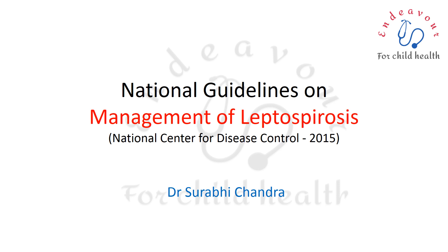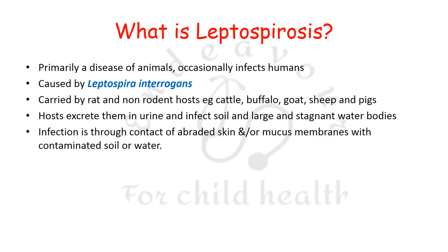Leptospirosis is primarily a disease of animals, occasionally infecting humans, but has been increasingly seen in children these days. It is caused by Leptospira interrogans, carried by rat and non-rodent hosts such as cattle, buffalo, goat, sheep, and pigs. Hosts excrete the organism in urine and infect soil and stagnant water bodies. Infection occurs through contact of abraded skin and/or mucous membranes with contaminated soil or water.